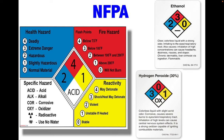This means that ethanol is quite flammable, has no chemical reactivity, and is fairly hazardous to health, with no additional information to worry about. Another example: hydrogen peroxide is represented by 0 in red, 1 in yellow, 3 in blue, and OX in white. This means hydrogen peroxide is not flammable, has no chemical reactivity unless heated, is very hazardous to health, and is an oxidizing agent.